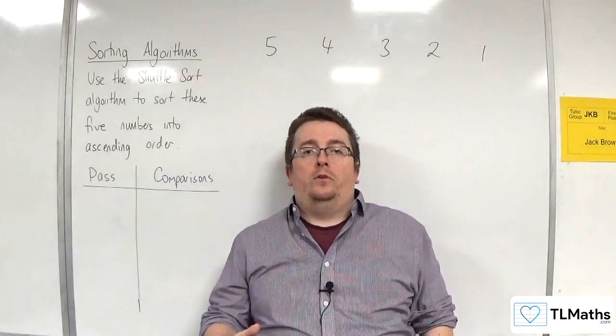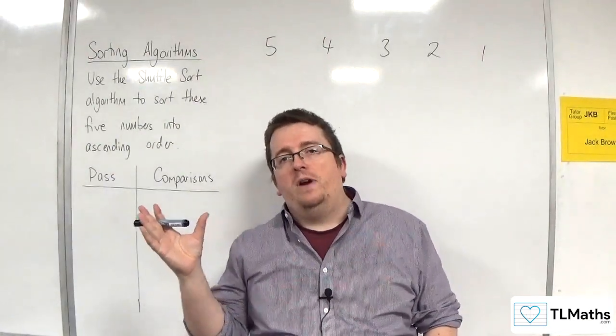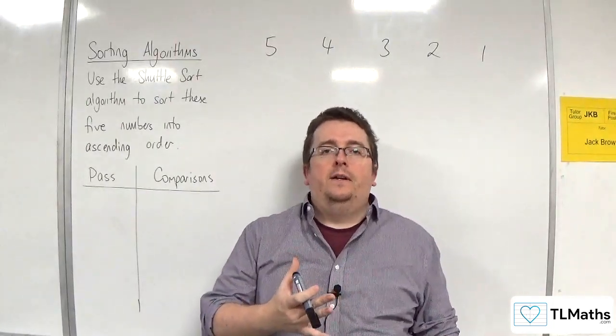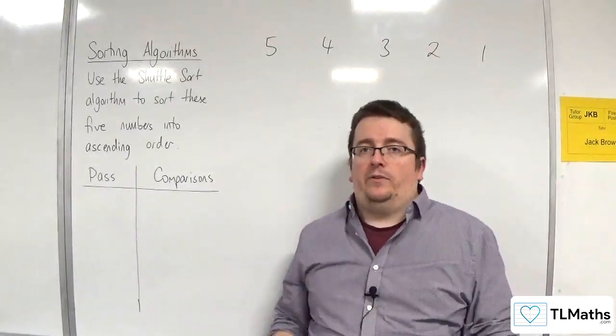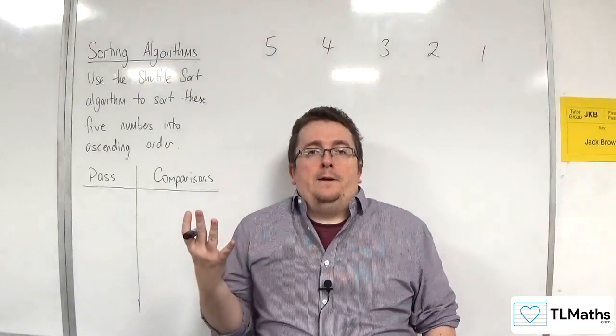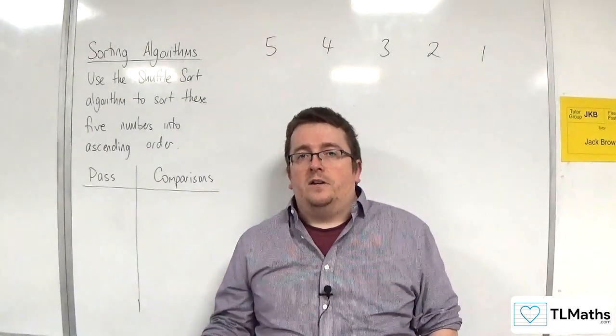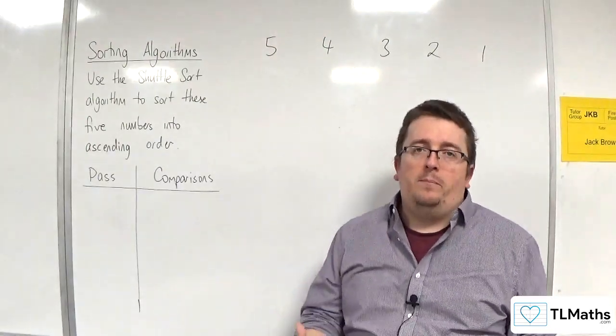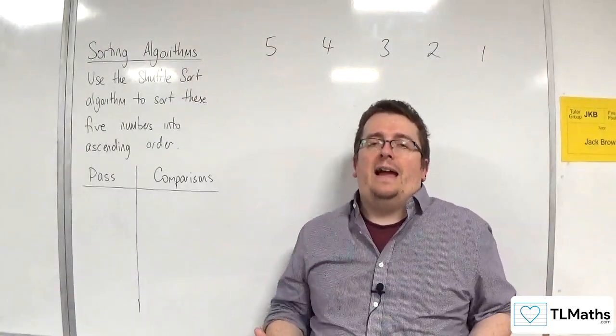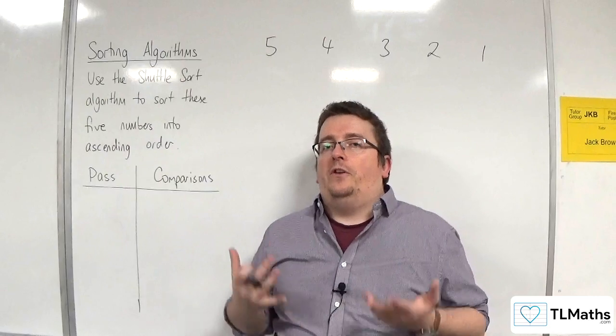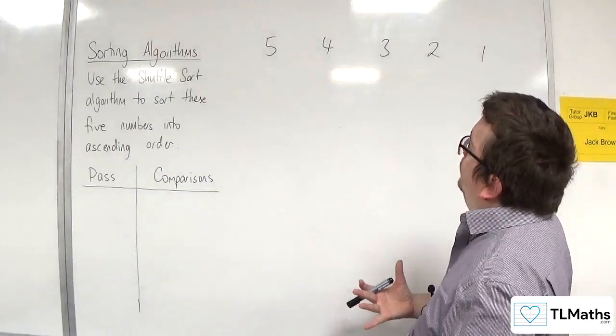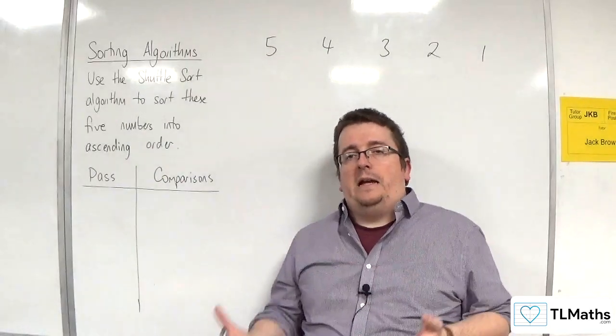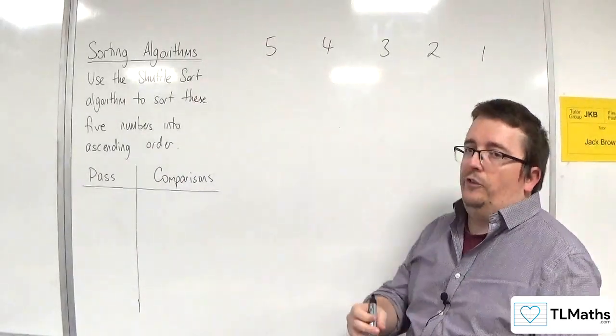In the previous video, we saw that if the list is already in ascending order and you want to put the list into ascending order, then this appeared to be the best case scenario, and it was order of n complexity in that case. But, of course, when we talk about complexity, we really are looking at worst case scenario. So, we're going to now try the shuttle sort when it is in complete reverse order, and we'll see how many comparisons we're dealing with then.